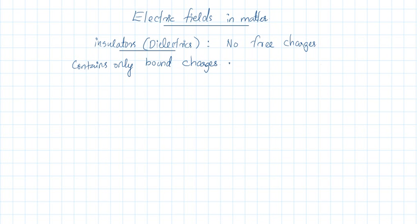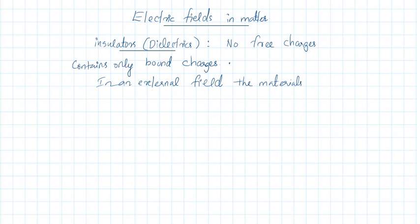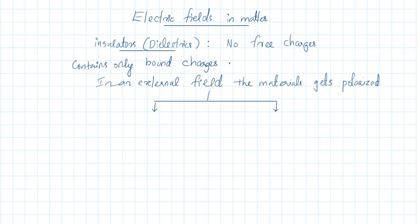When a dielectric is placed in an external field, there can be two types of phenomena. The material gets polarized. I will explain what is meant by polarization. The material gets polarized due to two effects: one is stretching and the other one is rotation. So there are two types of effects — stretching and rotating.